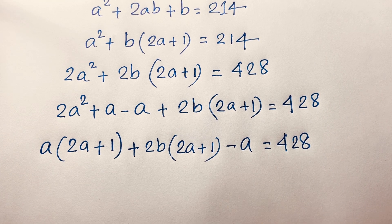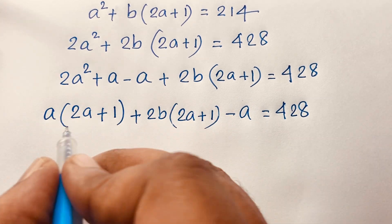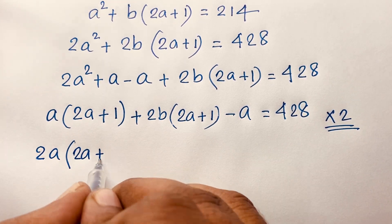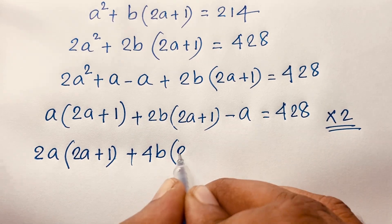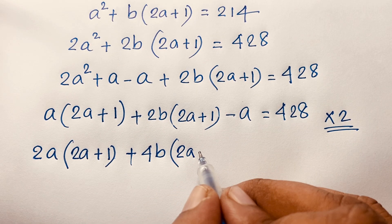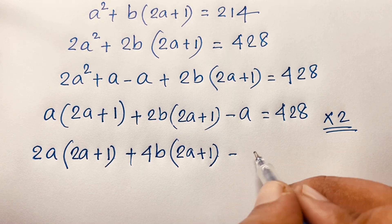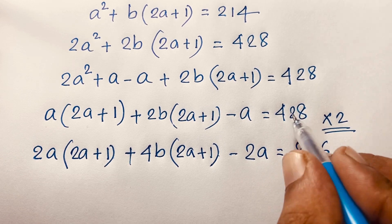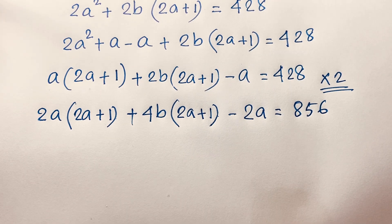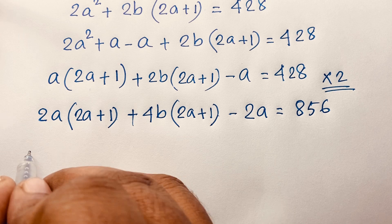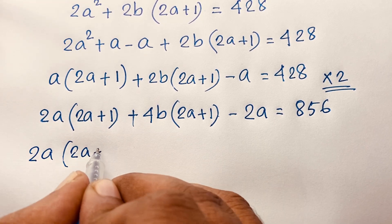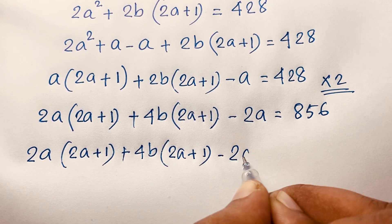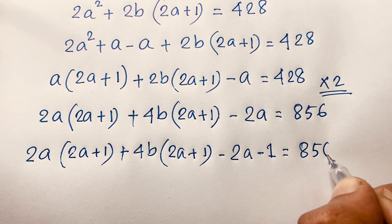Now I multiply both sides by 2 again. It will be 2a plus 1 plus 4b times 2a plus 1. And if I multiply this a by 2 it will be 2a, and 428 multiplied by 2 will be 856. Then I subtract both sides by 1, so: 2a plus 1 times 2a plus 4b plus 1 minus 2a minus 1 is equal to 856 minus 1.